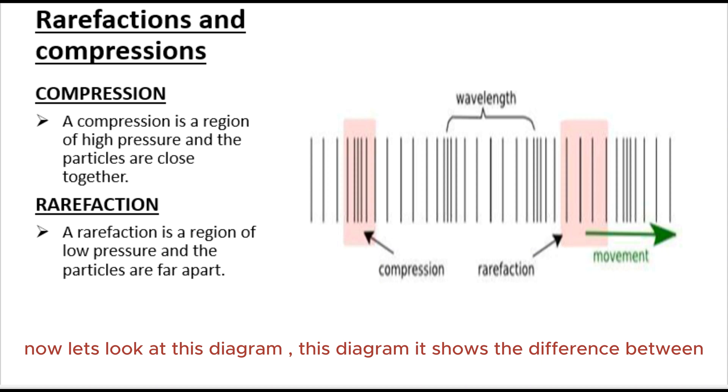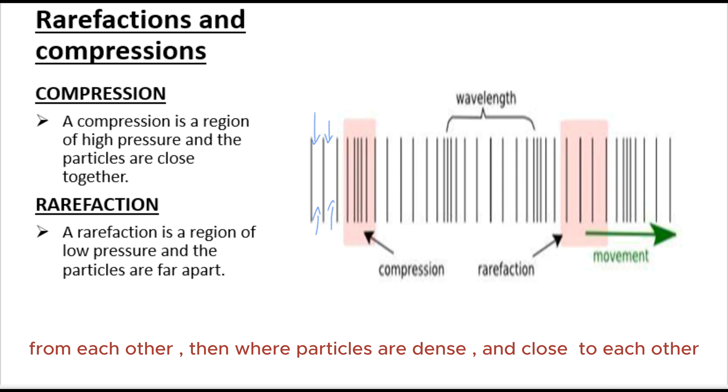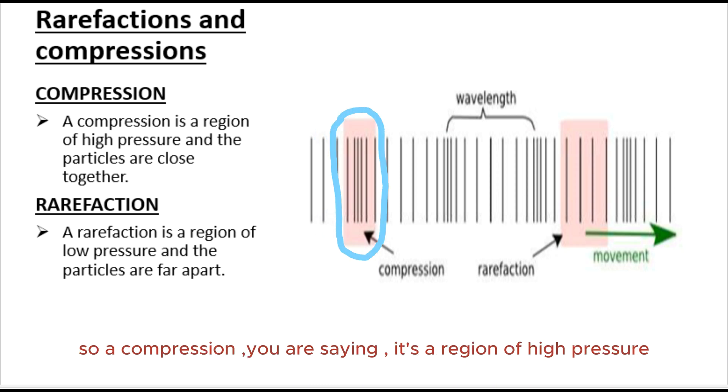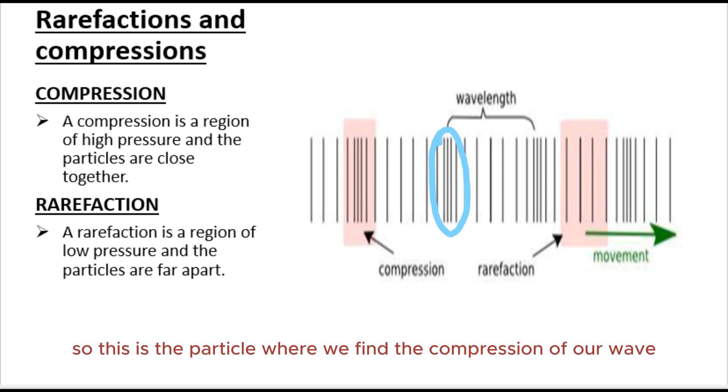Now let's look at this diagram. This diagram shows the difference between the movement of sound waves and transverse waves. This one represents sound waves, so we have what we call refractions and compressions. If you look at this diagram, we've got where particles are far away from each other, then particles where they are dense, where they are close to each other. A compression is a region of high pressure and the particles are closer together. This is where we will find the compression of our wave.